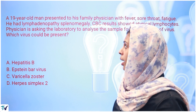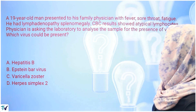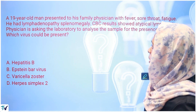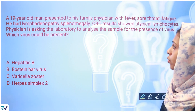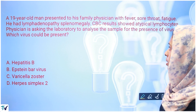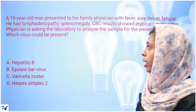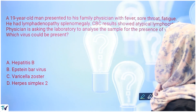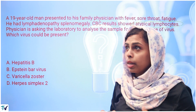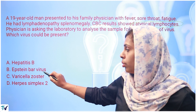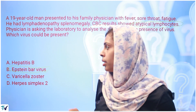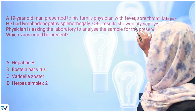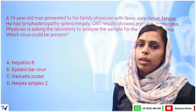Next question: A 19-year-old man presented to his family physician with fever, sore throat, and fatigue. He had lymphadenopathy and splenomegaly. CBC results showed atypical lymphocytes. The physician is asking the lab to analyze the sample for the presence of a virus. Atypical lymphocytes are a marker — this is definitely Epstein-Barr virus. So the answer is Epstein-Barr virus.